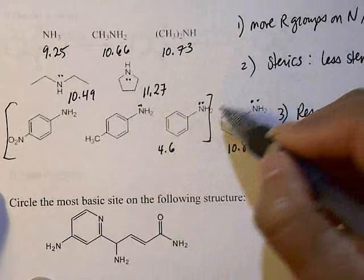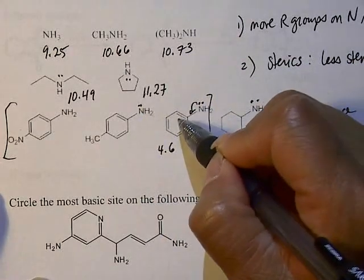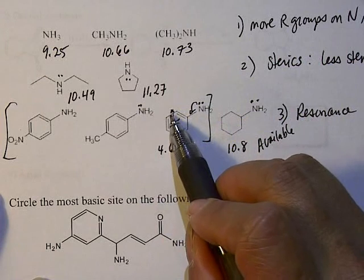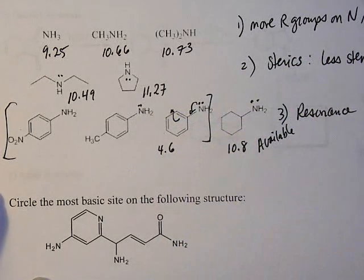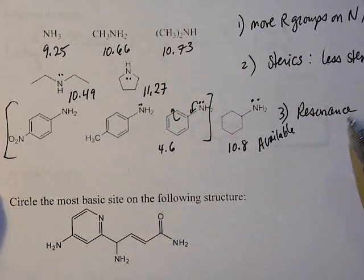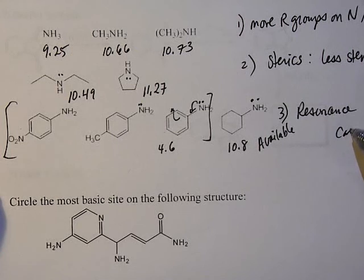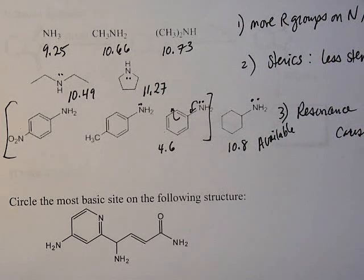Whereas the anilines, the lone pair is sort of tied up in the ring. You could draw a resonance structure where the lone pair is here and then here and then here. So whenever you have resonance with nitrogen lone pair, it's going to cause the amine to be decreasing in basicity.